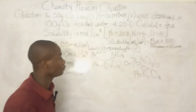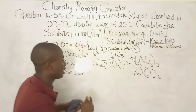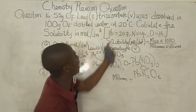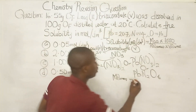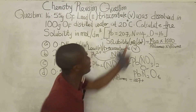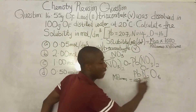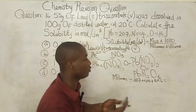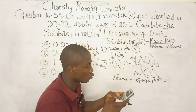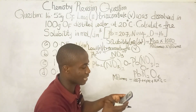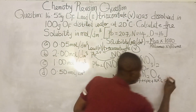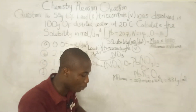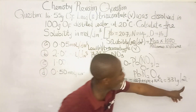Now let's calculate the molar mass. The atomic mass of lead is 207, nitrogen is 14 (×2), and oxygen is 16 (×6). So: 207 + (14×2) + (16×6) = 207 + 28 + 96 = 331 grams per mole. The molar mass of Pb(NO₃)₂ is 331 g/mol.